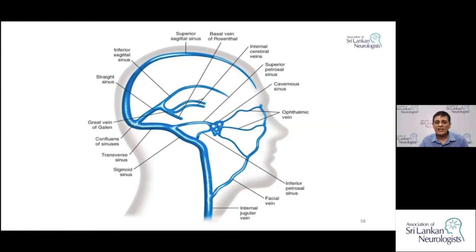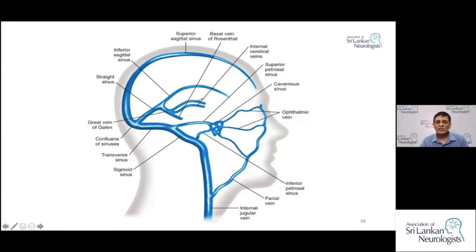Within the brain we have the deep vessels — the deep veins and the sinuses. You have the inferior sagittal sinus, and then the deep veins, which are the internal cerebral veins and the basal veins. These two join together to form the great vein of Galen, which combines with the inferior sagittal sinus to form the straight sinus.